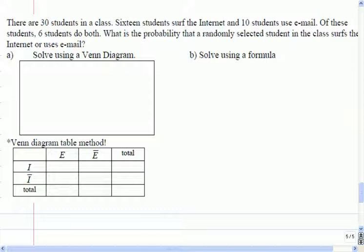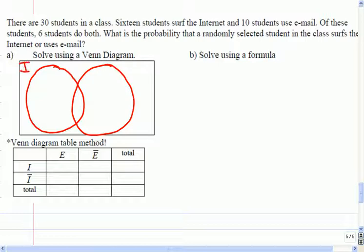So here's some information we might have to process. For example, there are 30 students in a class, 16 are on the internet, 10 use email. Of these, 6 are doing both. What's the probability a randomly selected student is surfing the internet or using their email? Okay, so let's try and model this first with a Venn diagram. It looks like there's two groups according to the information I've got. One which is using the internet, and one which is using email. So my job is to try to figure out how to create the Venn diagram. Does anybody have a good suggestion on where to start?